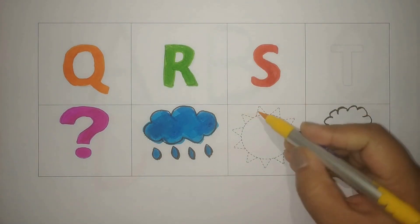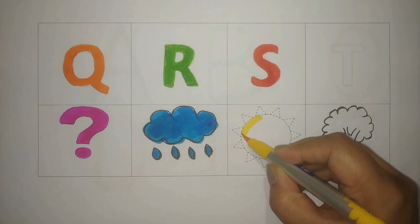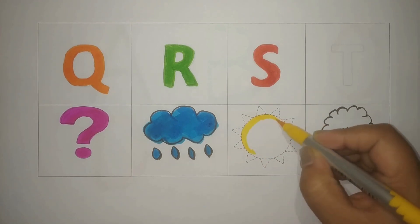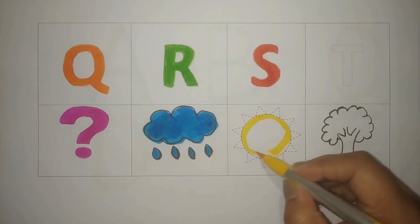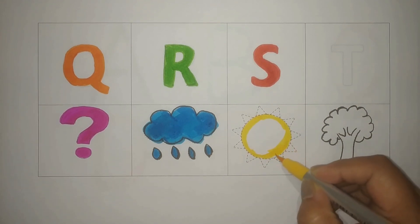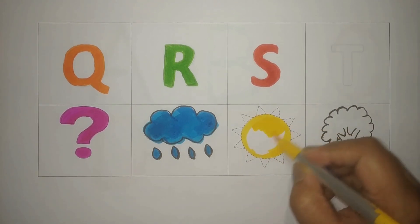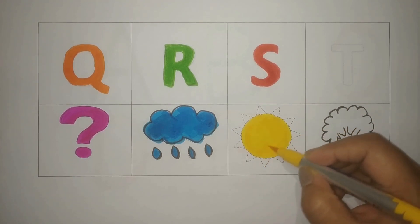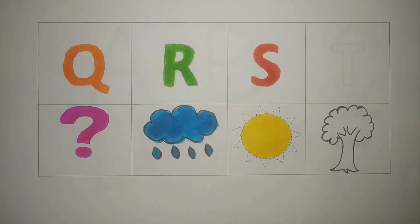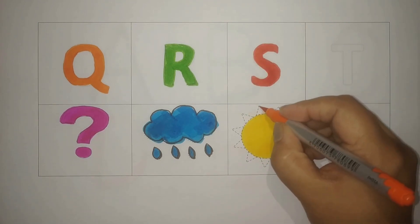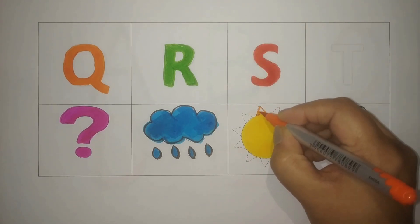Now let's color the bright and shining sun. Yellow color, S for sun. Yellow color. Orange, S for sun. Orange color.